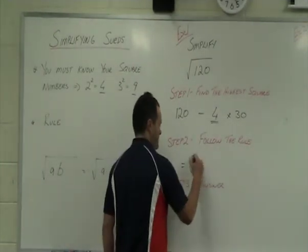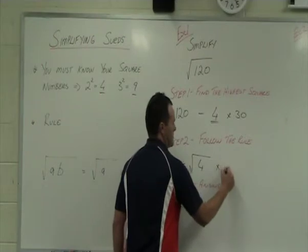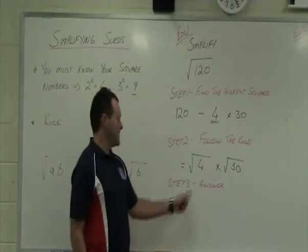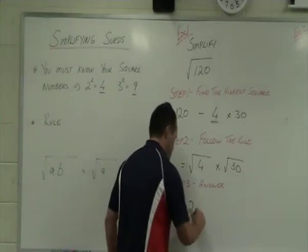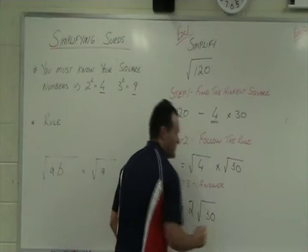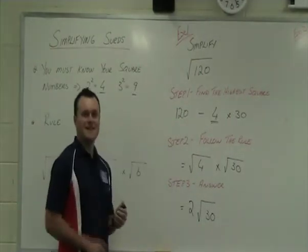Follow the rule then. Root 4 times root 30. Okay, and then let's get our answer. Square root of 4 is 2, root 30. Nice and easy.